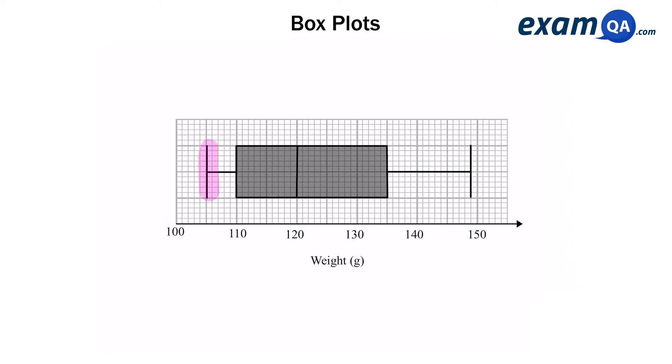Okay, so let's look at the five key lines. The first one on the left, that is our lowest possible weight, our minimum weight of our sample.